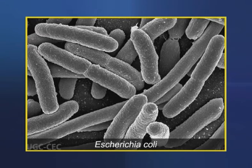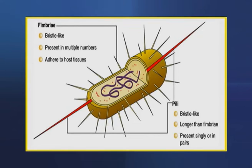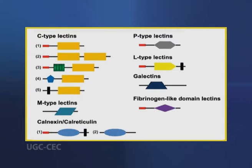Bacteria too contain lectins. E. coli bacteria adhere to epithelial cells of the gastrointestinal tract because lectins on the E. coli surface recognize oligosaccharide units on the surface of target cells. These lectins are located on slender hair-like appendages called fimbriae or pili. Lectins are divided into classes on the basis of amino acid sequence and biochemical properties. One large class is the C-type, found in animals.